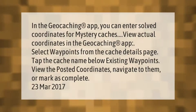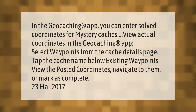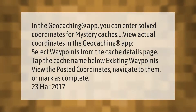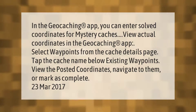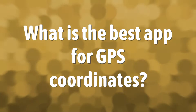In the geocaching app, you can enter solved coordinates for mystery caches and view actual coordinates. Select waypoints from the cache details page, then tap the cache name below existing waypoints to view the posted coordinates, navigate to them, or mark as complete.